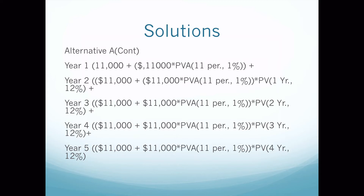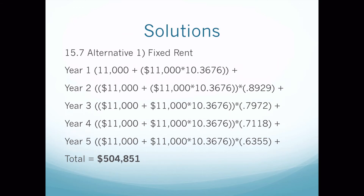We're going to multiply $11,000 times PVA for 11 periods at 1% and then add $11,000. For the following years we need to discount those forward, so we have the same formula for years 1 through 5 for the rent during the year. We discount using PV for one year at 12% on year 2, two years at 12% on year 3, going down to four years at 12% on year 5. The greatest challenge students have with calculating this is not doing the math right.